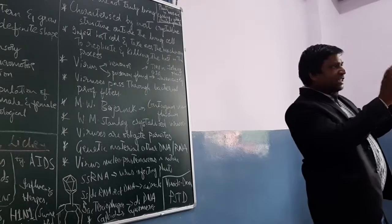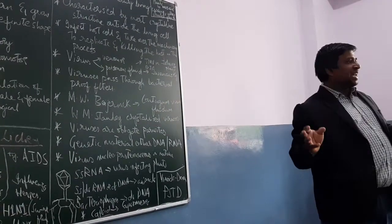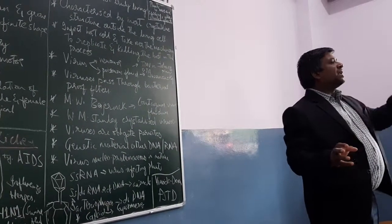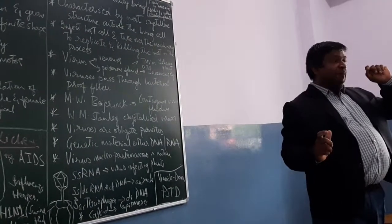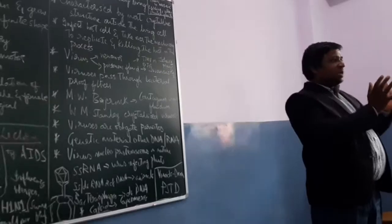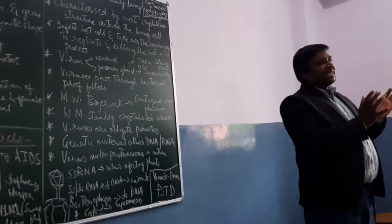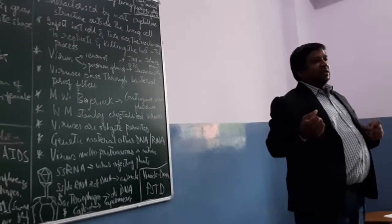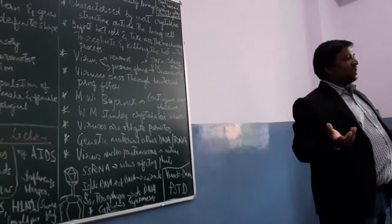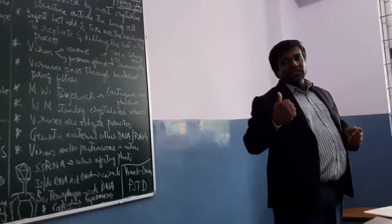The proteins in tobacco mosaic virus: we have the protein coat made up of units called capsomeres. The complete structure we call the capsid - protein coat. Capsomeres surround a centrally located RNA in tobacco mosaic virus.